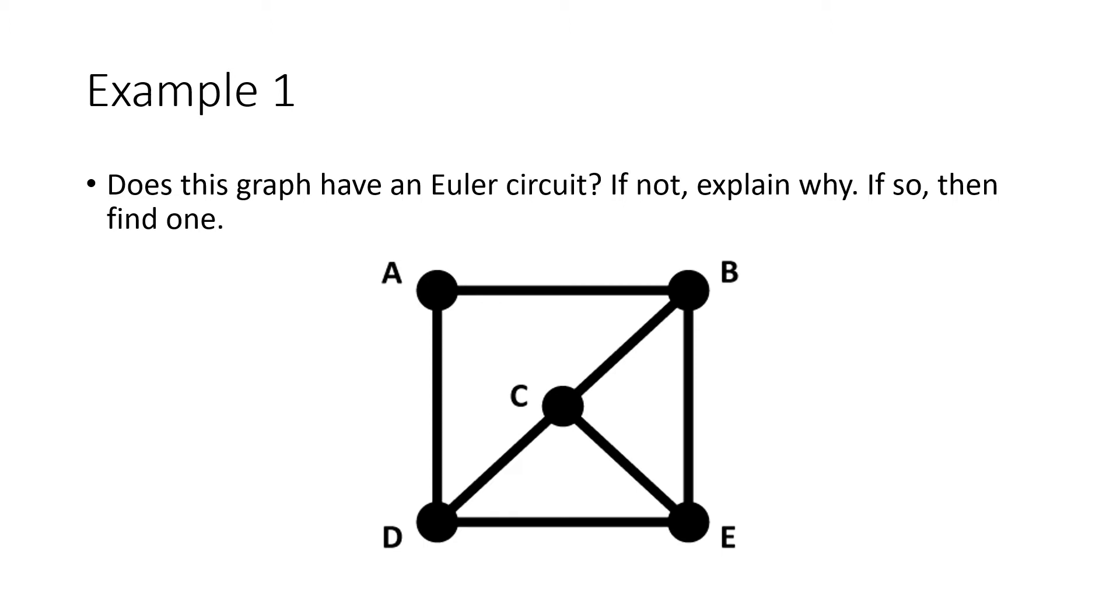Euler's Theorem says we need to figure out the degree of each one of these vertices. In other words, for each point here, each of these five labeled points, we need to count how many edges are coming into that point. For vertex A, the degree is 2, because there's two edges, this one and this one, coming into A.